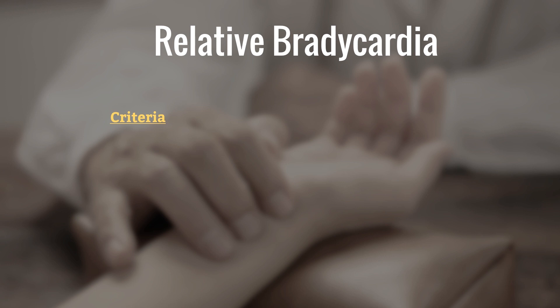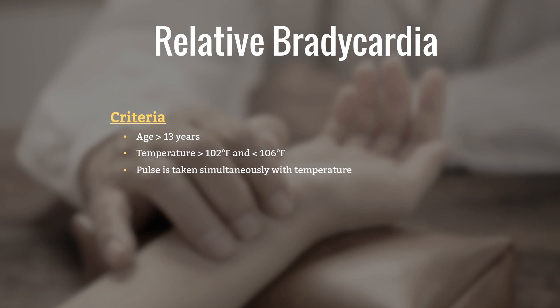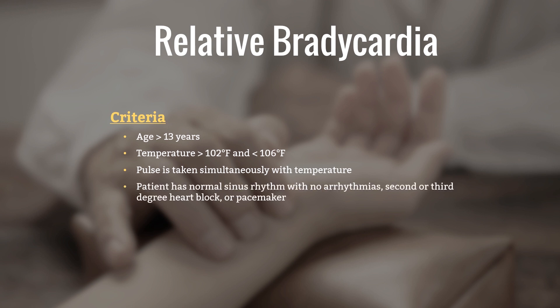The diagnosis of relative bradycardia: the criteria for using relative bradycardia in clinical diagnosis include: age of patient shall be 13 years or more; temperature between 102 and 106 degrees Fahrenheit; the pulse is taken simultaneously with the temperature; the patient has normal sinus rhythm and has no rhythm problems such as 2nd or 3rd degree heart block; and the patient is also not having a pacemaker, as it would otherwise not let the heart rate increase due to its programmed fixed rate.